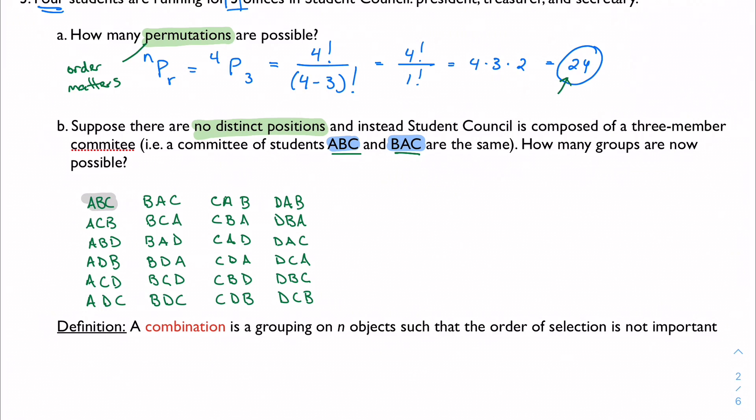So here's A, B, and C. So anything with A, B, and C in it in any order will be eliminated. So let's see, A, B, and C, A, B, and C, A, B, and C. I think I got them all.